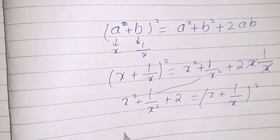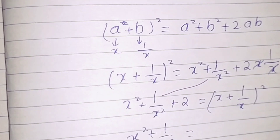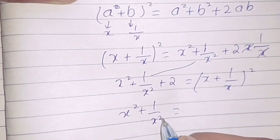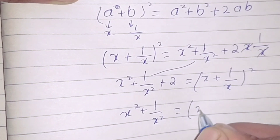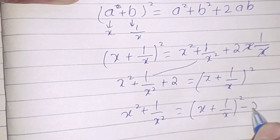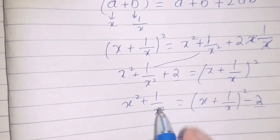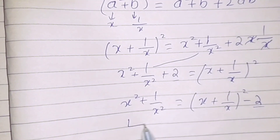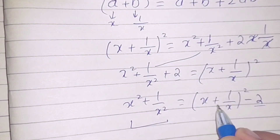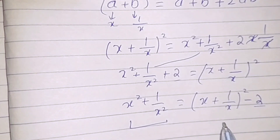From here we have x squared plus 1 by x squared is equal to x plus 1 by x whole square minus 2.